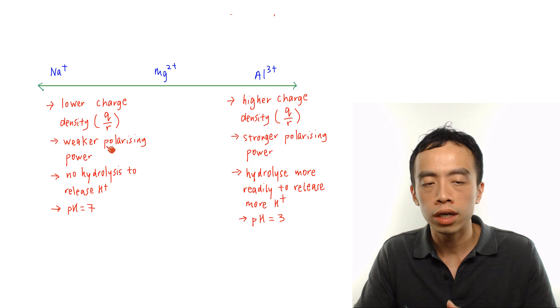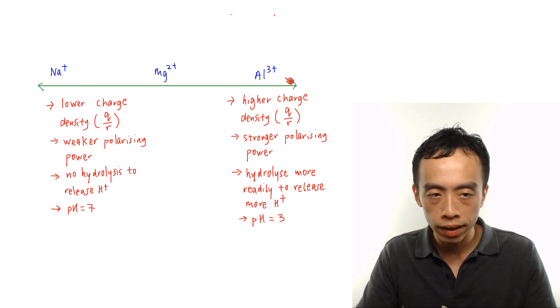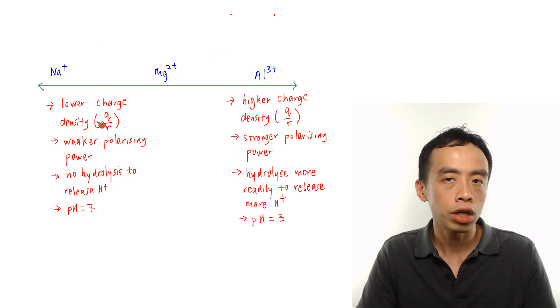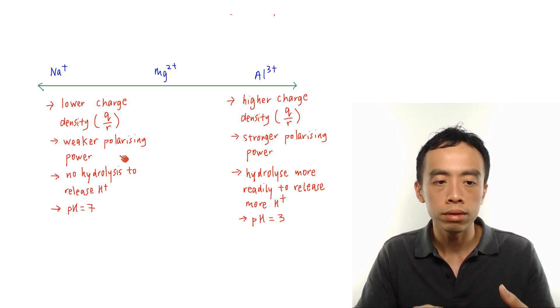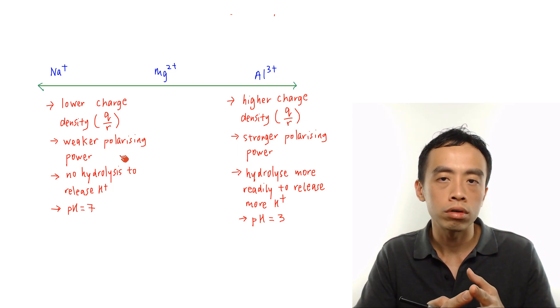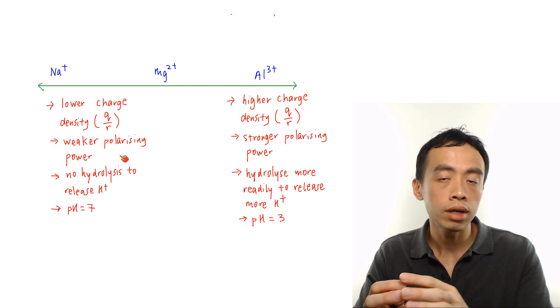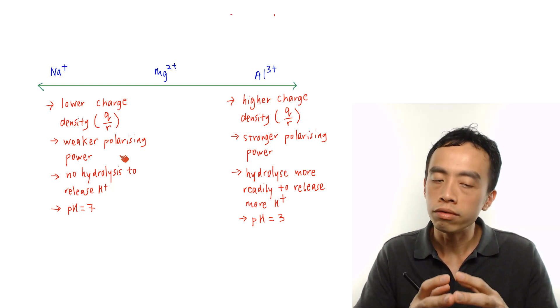So finally back to this comparison, again we have Na+, Mg2+, Al3+. Na+ has a lower charge density, so therefore it is less polarizing or it has a weaker polarizing power. So the ability for Na+ to distort the electron cloud of water is very limited.